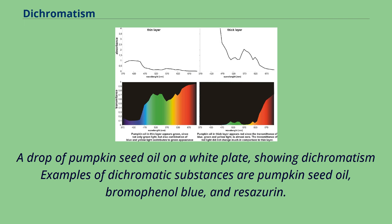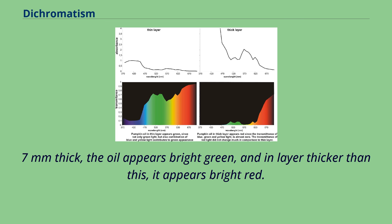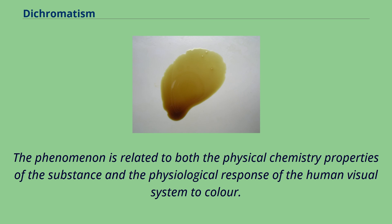When the layer of pumpkin seed oil is less than 0.7 mm thick, the oil appears bright green, and in layers thicker than this, it appears bright red. The phenomenon is related to both the physical chemistry properties of the substance and the physiological response of the human visual system to color.